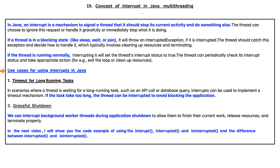Use cases for using interrupts in Java: The first use case is timeout for long-running tasks. In scenarios where a thread is waiting for a long-running task such as an API call or database query, interrupts can be used to implement a timeout mechanism. If the task takes too long, the thread can be interrupted to avoid blocking the application. The second use case is graceful shutdown — we can interrupt background worker threads during application shutdown to allow them to finish their current work, release resources, and terminate properly.